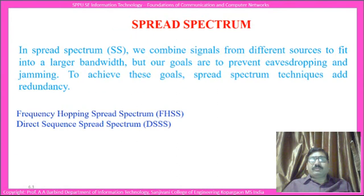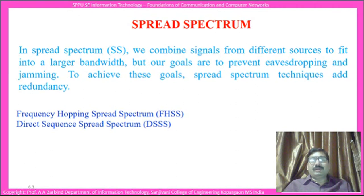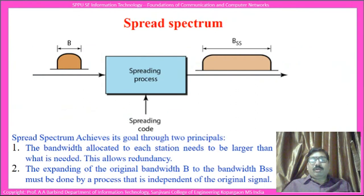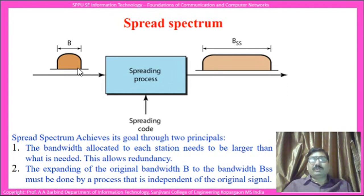In spread spectrum, we combine signals from different sources to fit into a larger bandwidth. The goal is to prevent eavesdropping and jamming. To achieve these goals, spread spectrum techniques add redundancy. The bandwidth of the input signal is increased from B to B_ss, and the process of increasing this bandwidth is called the spreading process.